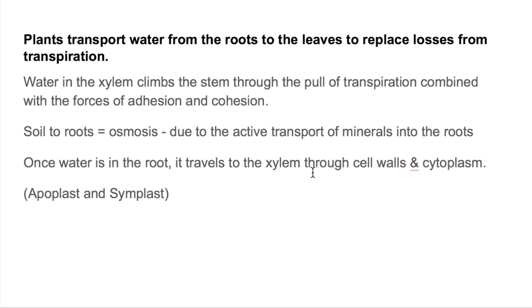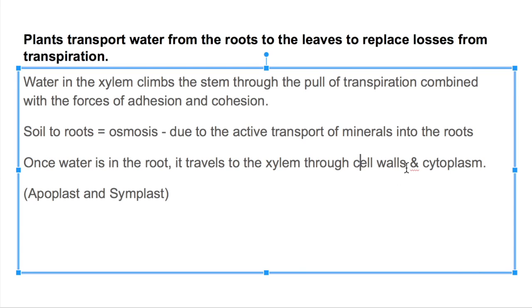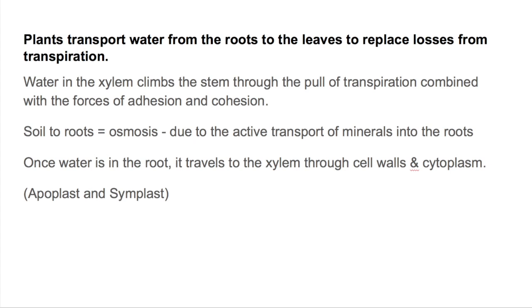Once the water is in the roots, it travels up the xylem through the cell walls and the cytoplasm. The cell wall is the apoplast way, and the cytoplasm is the symplast pathway. It basically means that the water is going through the cell wall or through the cytoplasm. An easy way to remember it is that symplast sounds more like cytoplasm.